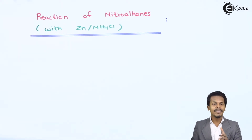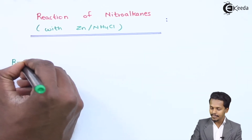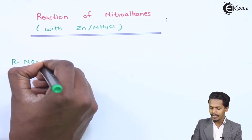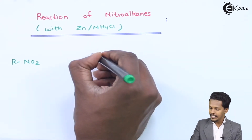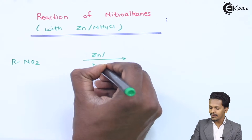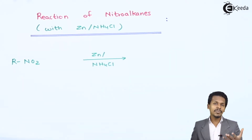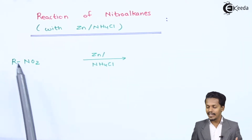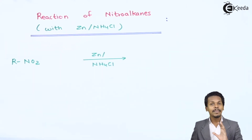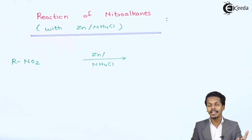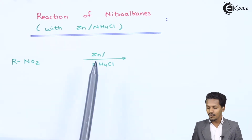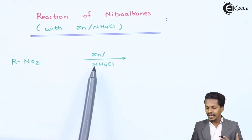The general reaction would be given as follows: suppose we have RNO2, that is nitroalkane, and we are reacting it with zinc in presence of NH4Cl. The reaction proceeds in a neutral medium — that is the reason we are using NH4Cl here. We have not used an acidic condition, neither a basic condition.